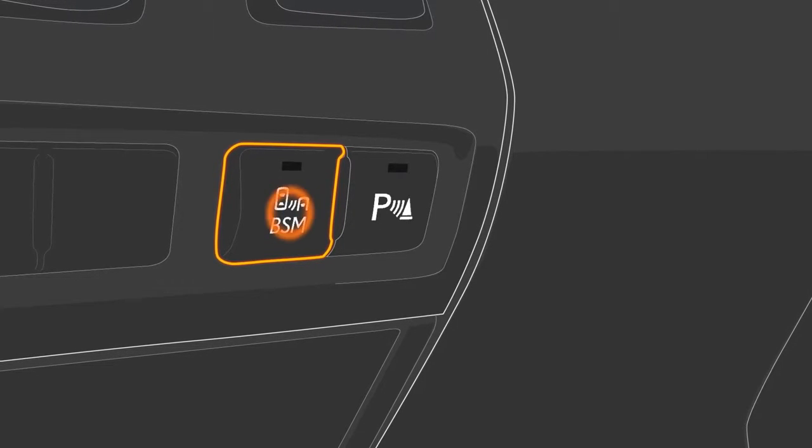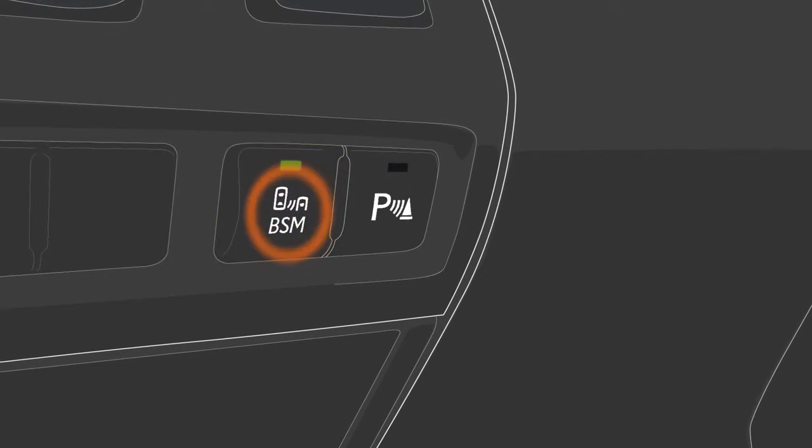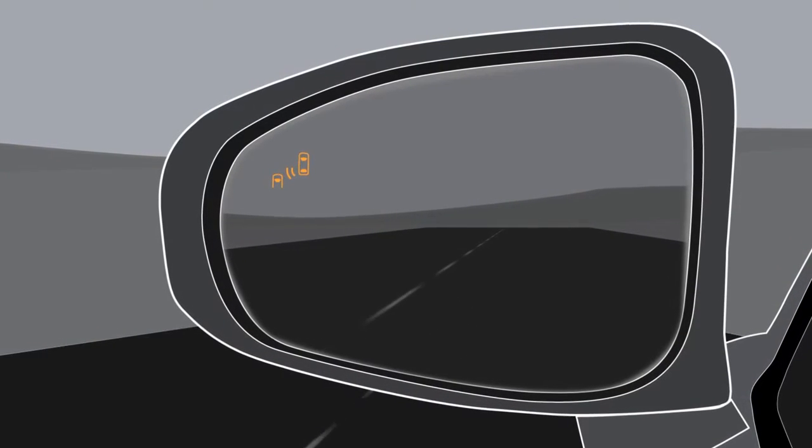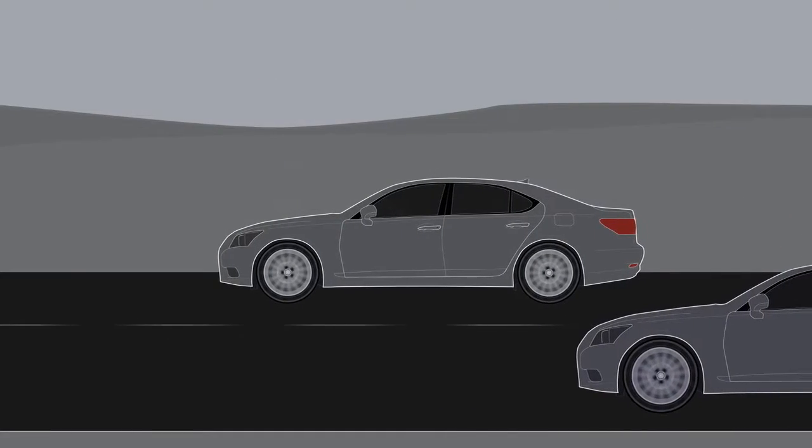Press the button to turn Blind Spot Monitor on. Indicator lights in the outside mirrors will come on for a few seconds as part of an initial system check.